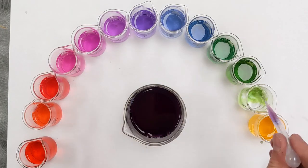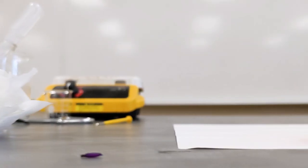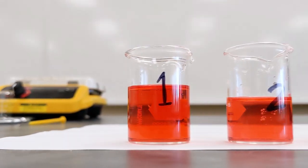The cabbage juice can then be used quite effectively as a universal indicator, with the color of the sample compared against a reference to determine the pH of an unknown solution.